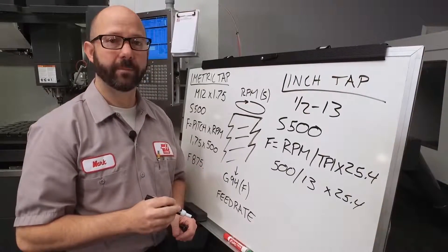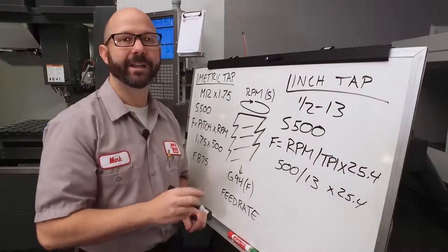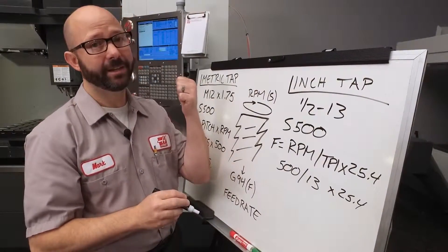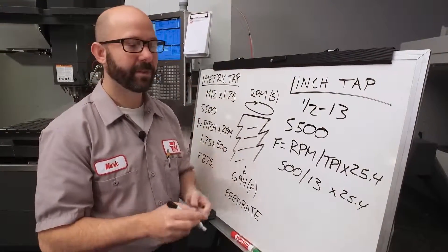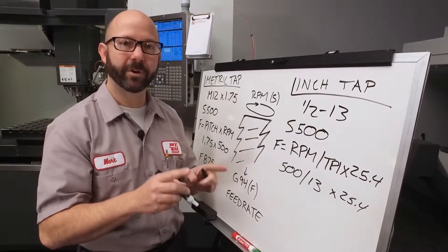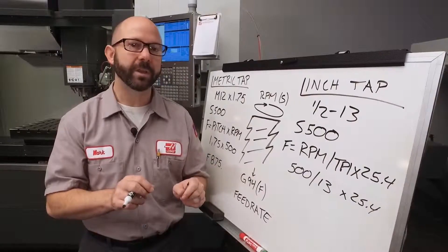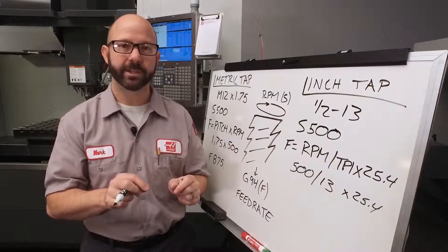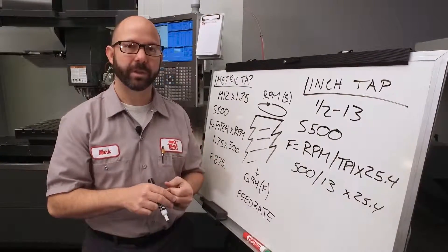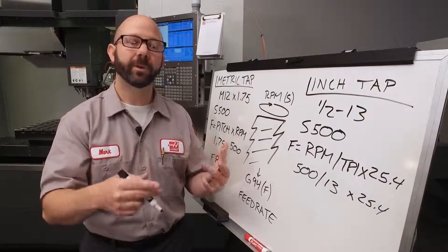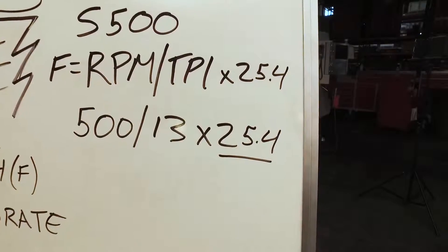Now where did the 25.4 come from? Our TPI is in inches, but my machine is in millimeters. The 25.4 converts those inches into millimeters. There are exactly 25.4 millimeters per inch. So by multiplying by 25.4, we've converted our formula into something the machine can use.